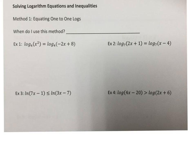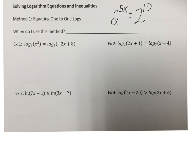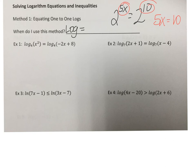We're going to be looking at solving logarithm equations and inequalities. Our first method is similar to one of the methods we've already used with exponents. If we had 2 to the 5x equals 2 to the 10, we were able to take our exponents and set them equal to each other because our bases are the same, so 5x has to equal 10. That was called equating our exponents in a one-to-one situation. Here we also have one-to-one with our logs, so this method is effective when we have a log equal to a log.